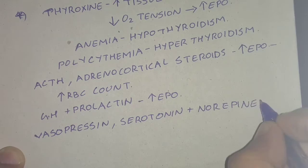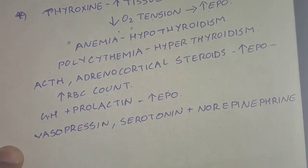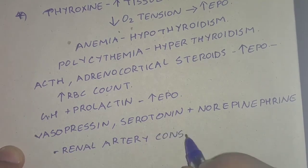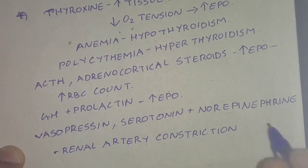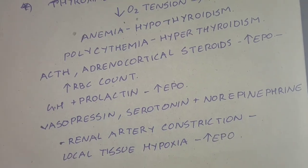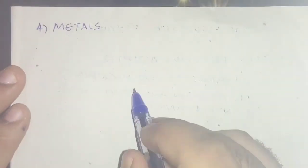Growth hormone and prolactin increase EPO secretion. Vasopressin, serotonin, and norepinephrine cause renal artery constriction leading to local tissue hypoxia in the kidney, which stimulates EPO secretion.